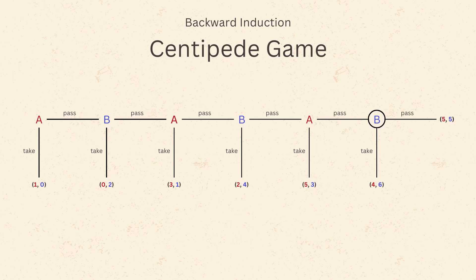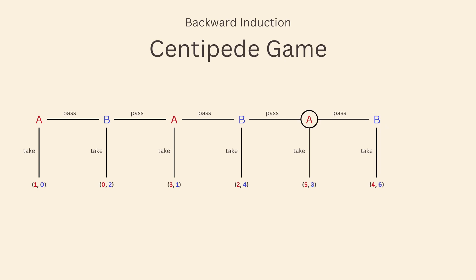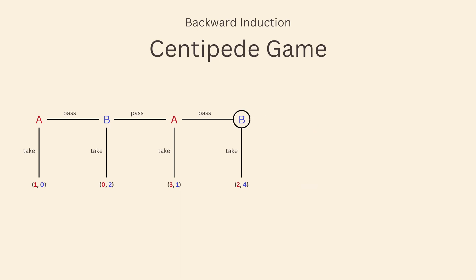We start from the last round, where player B has to choose between taking 6 points for themselves and giving 4 to A, or passing and getting 5 points for both. The optimal choice for player B is to take the 6 points. Therefore, we can eliminate the strategy of passing at the end. Knowing that B will choose to take it at the end of the game, taking on the 5th round is better for A, since she'll end up with 5 instead of 4. Hence, A will take 5 points in the 5th round, and we can eliminate the strategy of passing it to B, and so on and so forth.